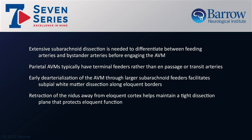In conclusion, this case demonstrates that extensive subarachnoid dissection is needed to differentiate feeding arteries from bystander arteries before engaging the AVM. Parietal AVMs typically have terminal feeding arteries rather than en passage or transit arteries. These terminal feeding arteries can be occluded at the margin safely. Early de-arterialization of the AVM through these larger subarachnoid feeders facilitates the sub-peel white matter dissection along eloquent borders, which should be saved until the end. Nidal retraction away from eloquent cortex with your sucker hand helps to maintain a tight dissection plane that protects eloquent function.